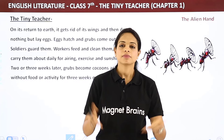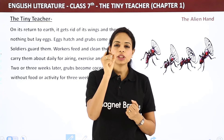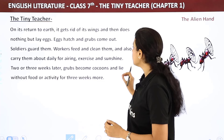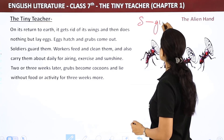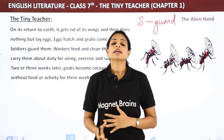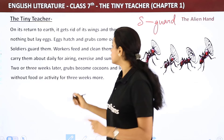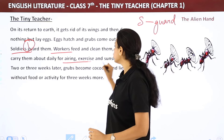Eggs hatch and grubs come out. Soldiers guard the grubs — they protect them. Workers feed and clean them, and also carry them about daily for airing, exercise, and sunshine. Workers have two jobs: to feed the grubs and to take them out daily for sunshine, exercise, and fresh air.